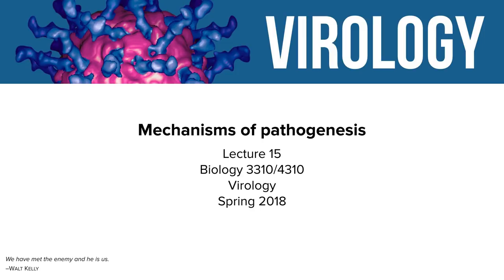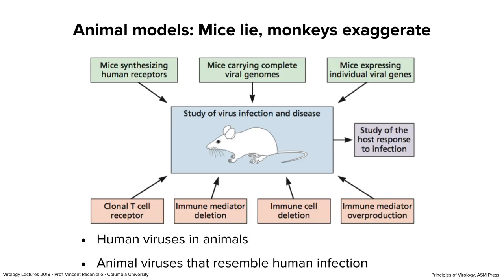The first thing we need to talk about is how we study pathogenesis. We obviously make lots of observations in people, but a great deal of what we understand about how viruses cause disease comes from using animal models. The first thing you need to remember about an animal model is captured by this statement: mice lie and monkeys exaggerate. No animal model predicts what happens in people.